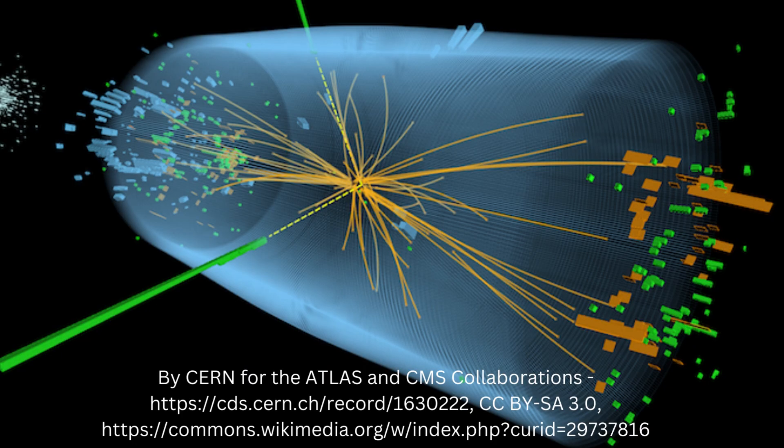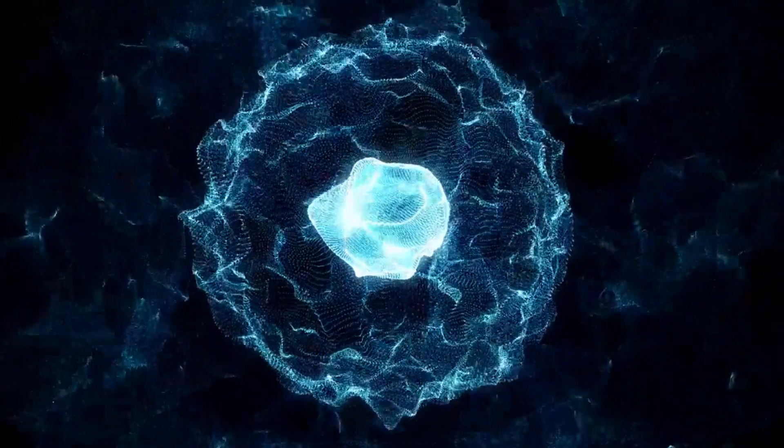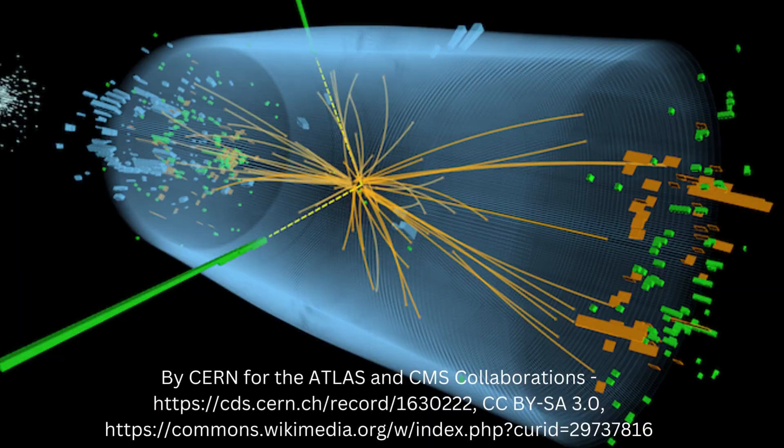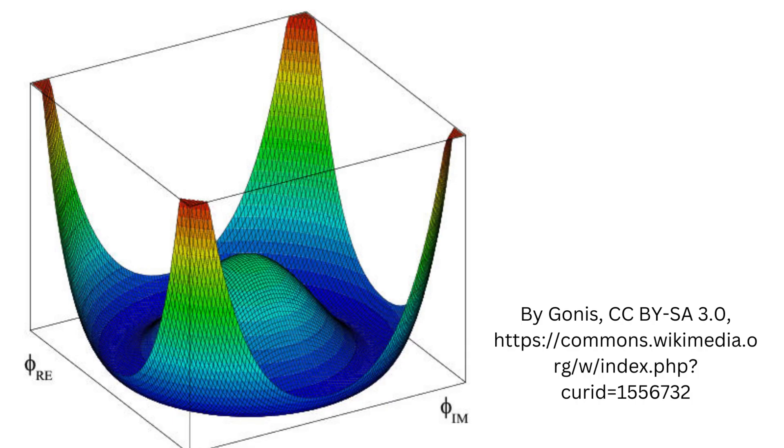Another example is the Higgs boson, which is related to other particles acquiring mass, is itself produced by the Higgs field in a similar manner.